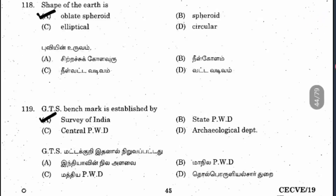Question 118: the shape of the earth is an oblate spheroid with a radius of nearly 6370 kilometers — an important fact to remember. Question 119: the GTS benchmark is established by the Survey of India.